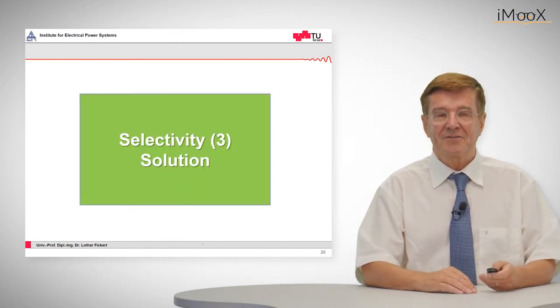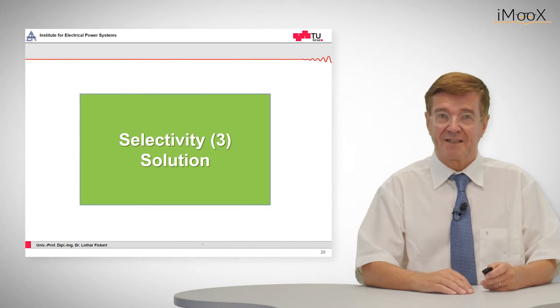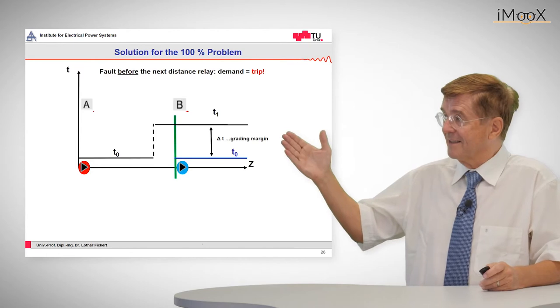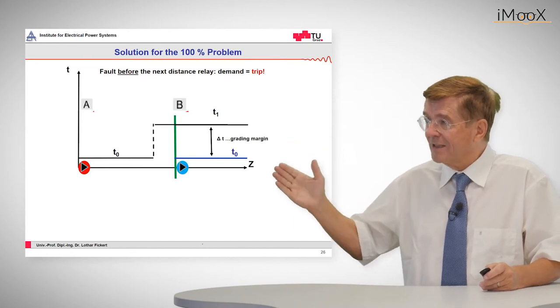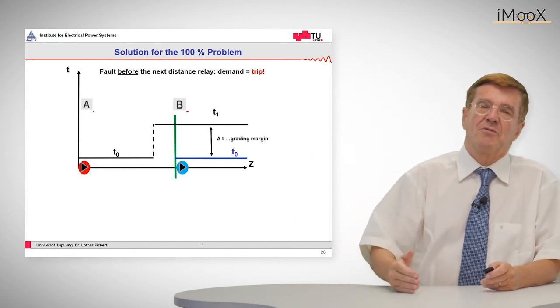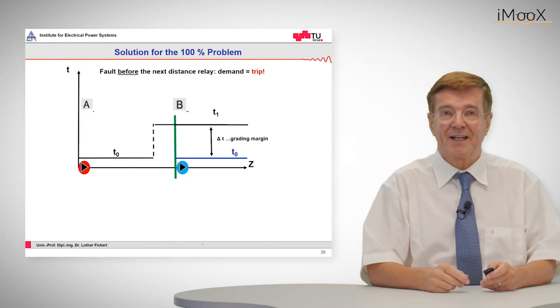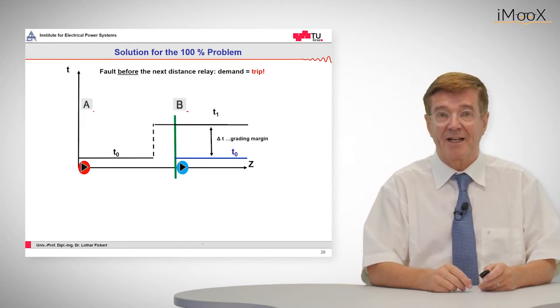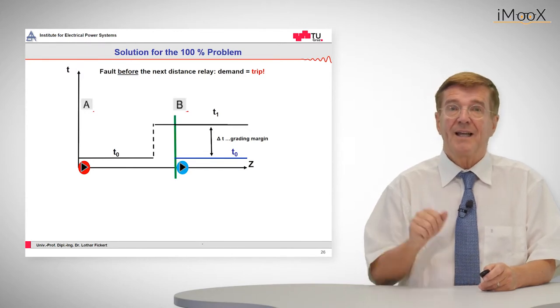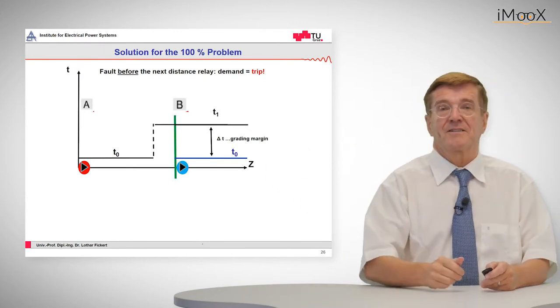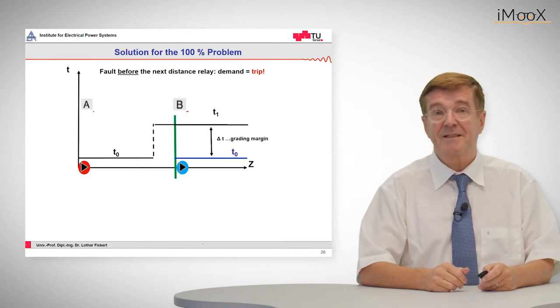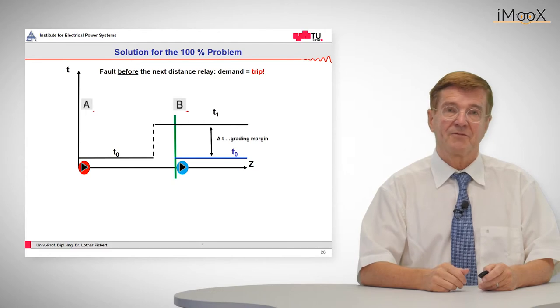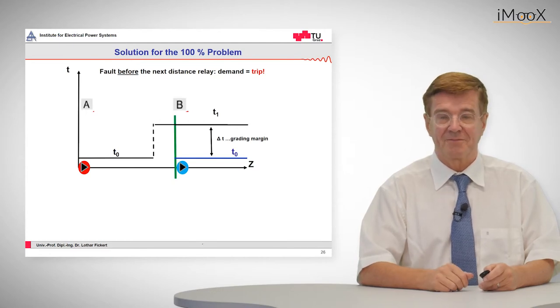Now let's integrate this into the solution to this selectivity problem. The solution is, as we can see, that the quick trip area is moved back towards relay A and approximately only 85% of each line are protected in quick time and the rest, the last 15% and behind that, will be tripped in a raised time. For example, in a raised time of 400 milliseconds.